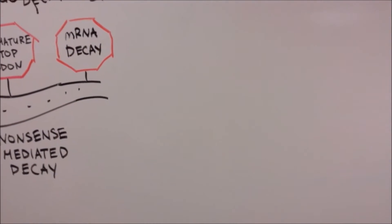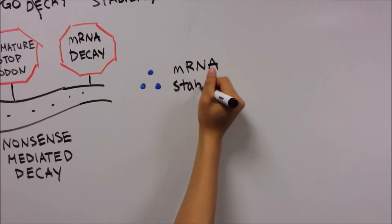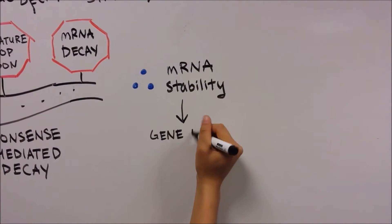Thus, it appears that two independent frameshifting mechanisms have evolved to post-transcriptionally regulate gene expression through mRNA stability.